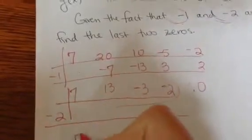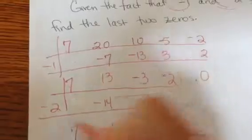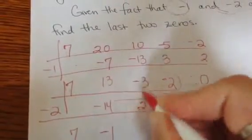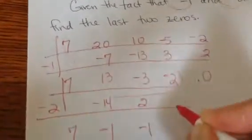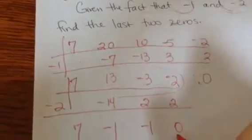So, whatever this first number is, we drop it straight down. Multiply on the diagonal. Add up and down. If I multiply, that's a positive 2. If I add, that's negative 1. That's a positive 2. And look, I get a 0. Better get a 0, because they told me.